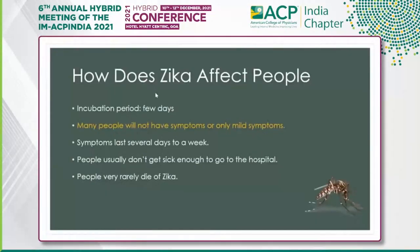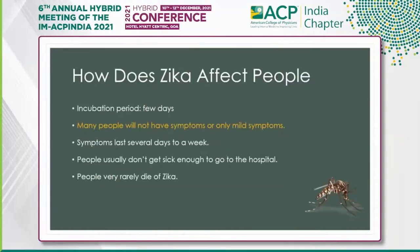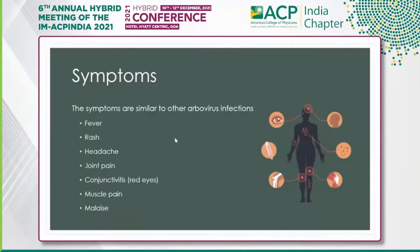How does Zika affect people? The incubation period is very short. Many people will not have symptoms, and illness is typically mild. Symptoms last several days to weeks; the first seven to ten days is usually the suffering period. People rarely require hospital admission, and death is unusual — only around 51 total deaths have been reported globally. Symptoms include fever, rash, headache, joint pain, conjunctivitis (red eyes), muscle pain, backache, and malaise.